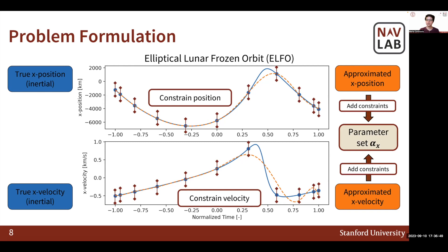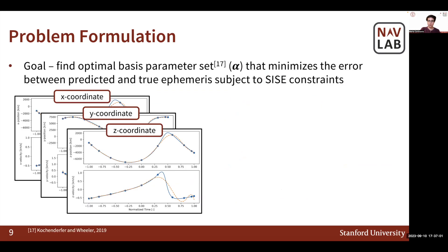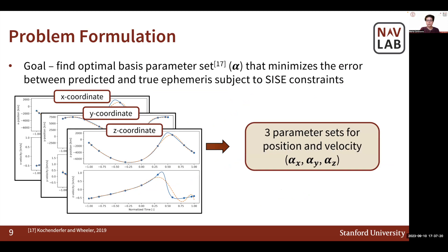This method itself is function interpolation, where we set a specific approximation interval over which we want to find parameters representative of the true satellite state in orbit. Since we are pursuing a Cartesian-based model, we want to find the optimal basis parameter set that minimizes the error between predicted and true ephemeris subject to signal-in-space error constraints. We do so at each of the three Cartesian coordinates for orbit position and velocity, thus obtaining three distinct parameter sets. Note that since we do this in an inertial frame of reference, the parameter set obtained for a specific coordinate is valid for approximation of both position and velocity in that coordinate.